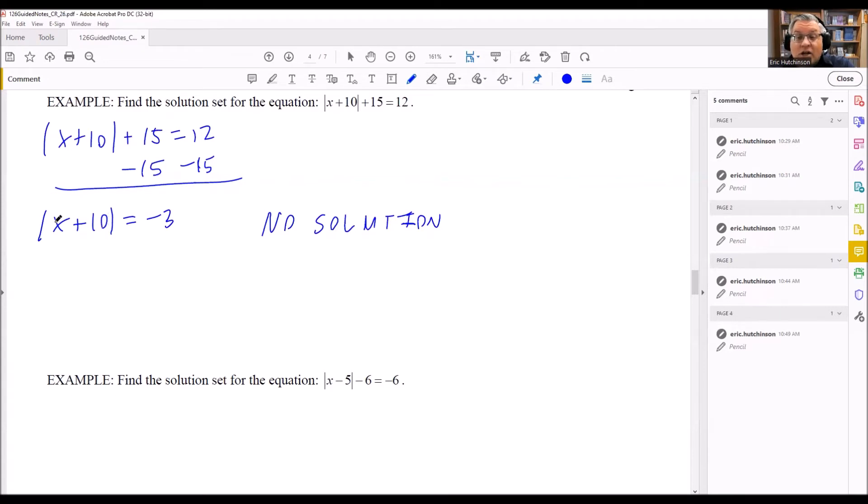So even if you were to put, like, say, a negative 7 in here, you get absolute value of 3. But the absolute value of 3 is positive 3, not negative 3. So no matter what number is inside here, it's always going to give you a positive result. So whenever you have an absolute value on the left-hand side and you have a negative number on the right-hand side, automatically no solution.